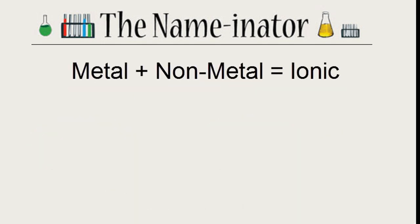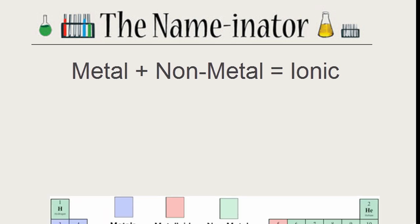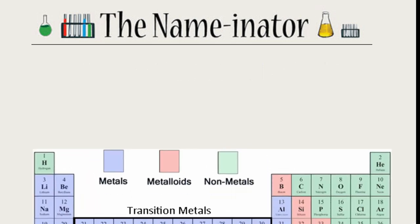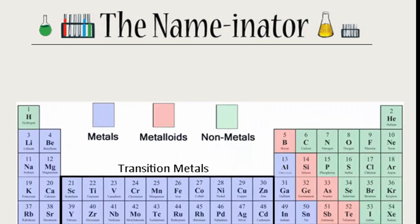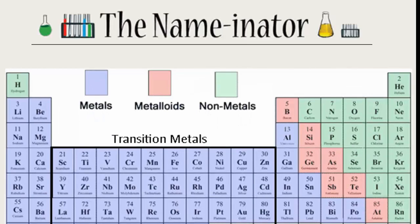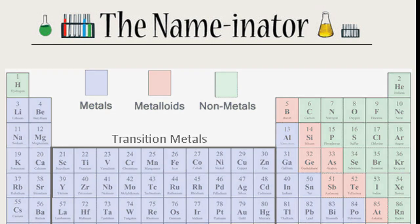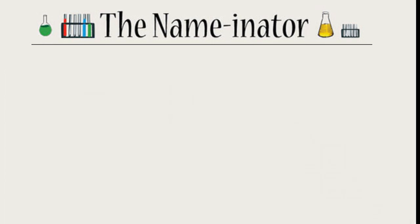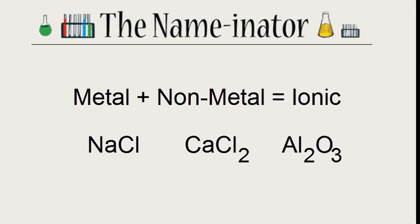Whenever we have a metal and a nonmetal, it's an ionic compound. Metals are on the left of the periodic table and nonmetals are on the right. Don't worry too much about the metalloids. There are a few types of ionic compounds to recognize. If we have a metal and only one type of nonmetal, it's binary ionic.